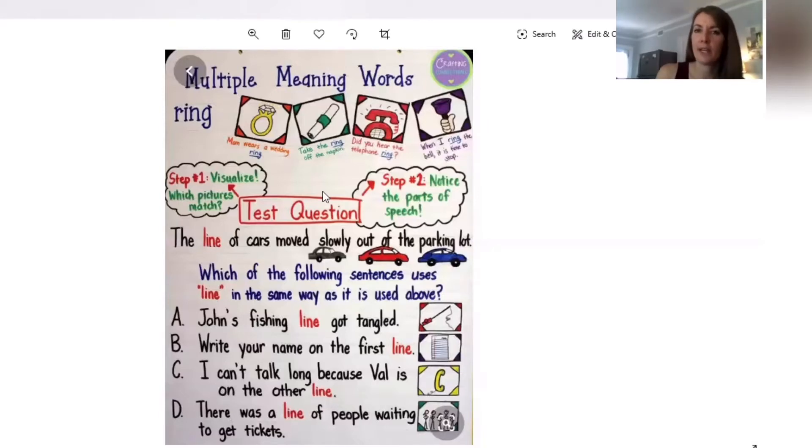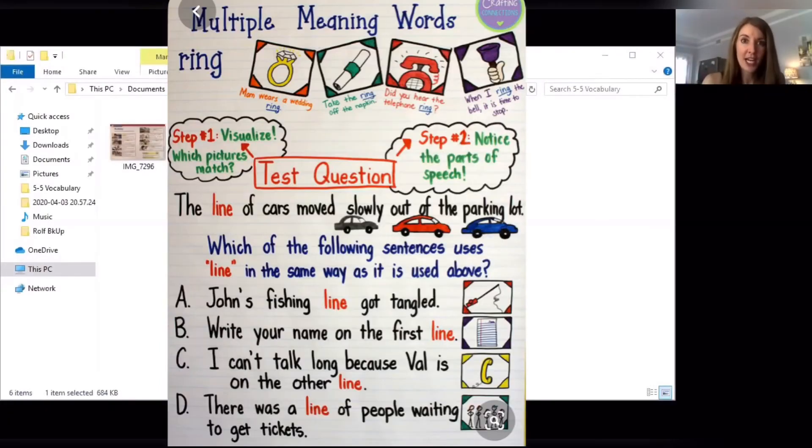Kind of like what we do when we are going out to specials or getting a drink of water, we're all waiting our turn. And so I visualize this picture right here, all the people lined up in a row. Does that match a line of cars in a row? It does. So D is the only sentence that uses the word line to mean in a row.